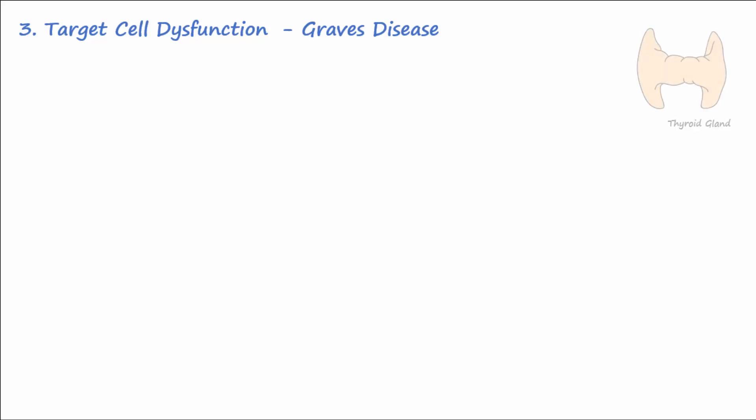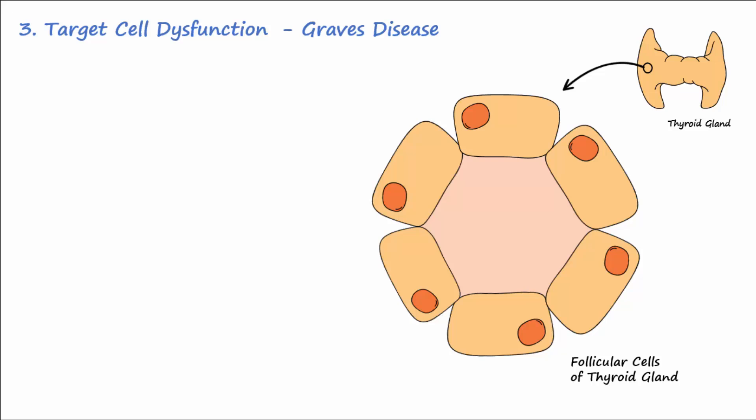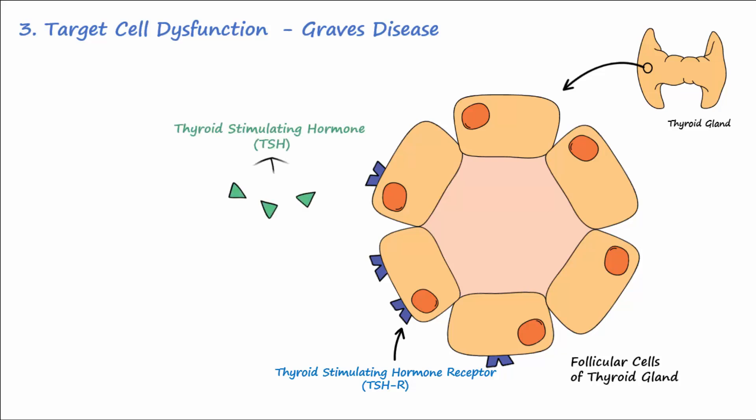The third mechanism of type 2 reactions is known as target cell dysfunction. Graves' disease is an autoimmune condition that involves the follicular cells of the thyroid gland. These cells have receptors for thyroid-stimulating hormone, or TSH. Under normal conditions, TSH binds to its receptor and promotes the production of the thyroid hormones T4 and T3.